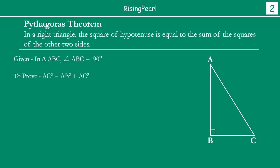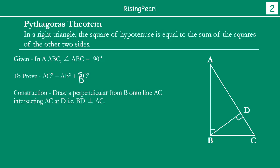Then we have to prove. First we write what is given. What we have to prove is AC² is equal to AB² plus BC². Next, we do a simple construction: we drop a perpendicular from B on the hypotenuse AC. So by construction, BD is perpendicular to AC.